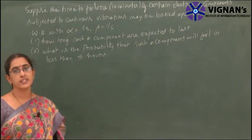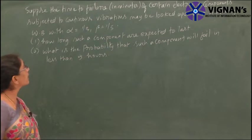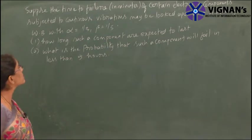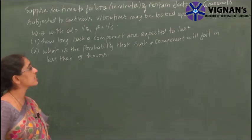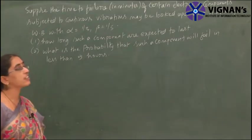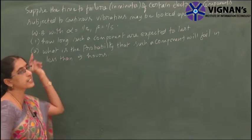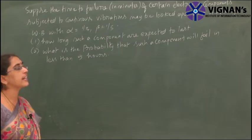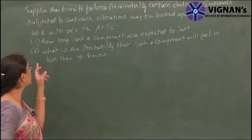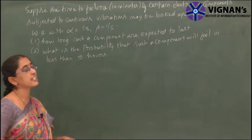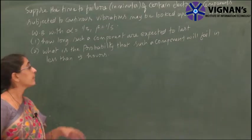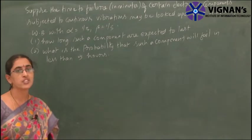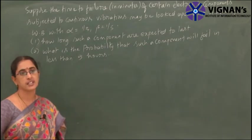Now let us see the last problem in this second unit. Suppose the time to failure in minutes of certain electrical components subjected to continuous vibrations may be looked upon as a variable having Weibull distribution with alpha equal to 1/3 and beta equal to 1/5. How long are such components expected to last? And what is the probability that such a component will fail in less than 5 hours?